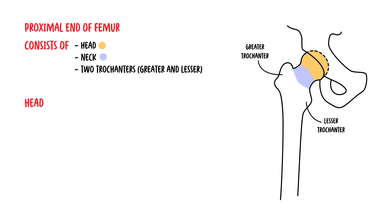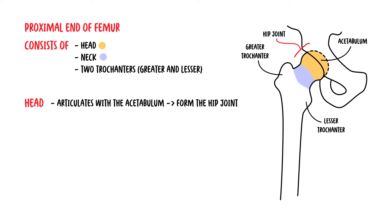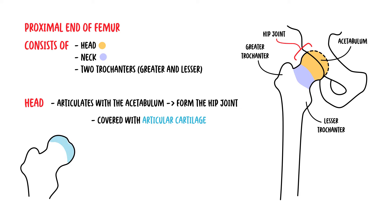The head of the femur is round and it articulates with the acetabulum of the pelvis to form the hip joint. The femoral head is covered with articular cartilage, except for a medially placed depression or pit — the fovea — for the ligament of the head.